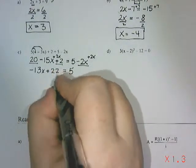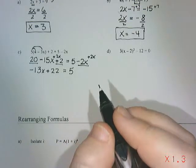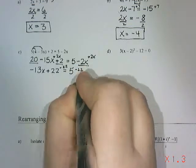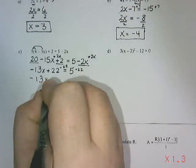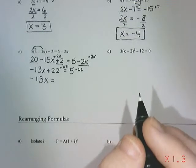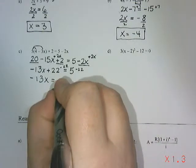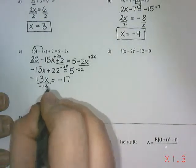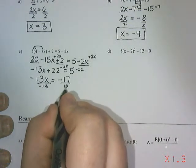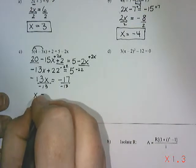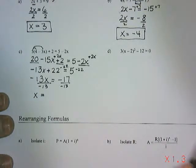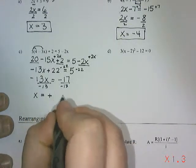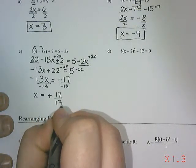And then what we're going to do is take the 22 to the other side and subtract. So I have negative 13x. 5 take away 22 should be negative 17. And then we're going to divide both sides by negative 13. Now unfortunately, 17 does not divide nicely by 13. So we're going to leave it as a fraction. But I do have a negative and a negative. So that's an even match. So that's going to give me a positive. And that's going to be 17 over 13.